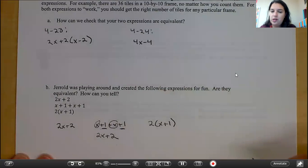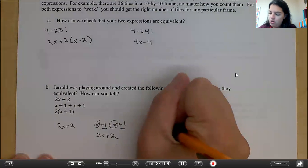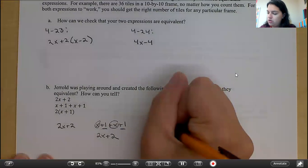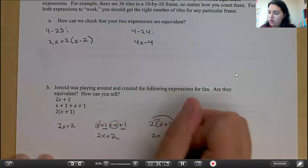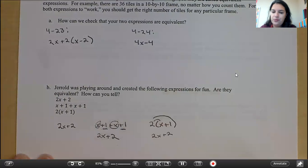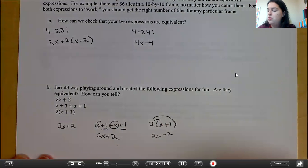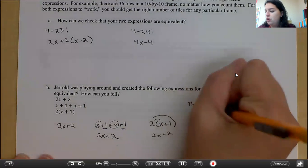Which is now the same as this expression. Here, we have to do something called the distributive property. So you multiply whatever's on the outside to everything on the inside. So 2 times x is 2x. And 2 times 1 is 2. So now all of our expressions are written in the same form. They are all 2x plus 2, which means that they are equivalent.